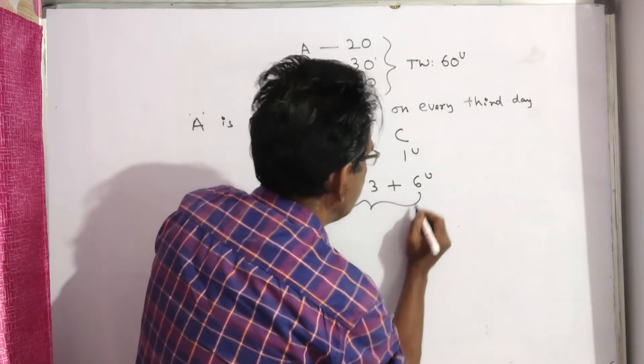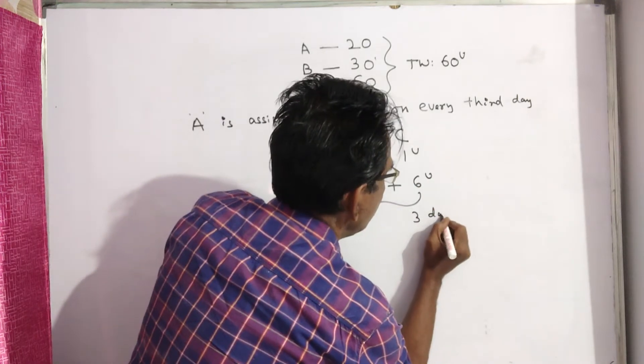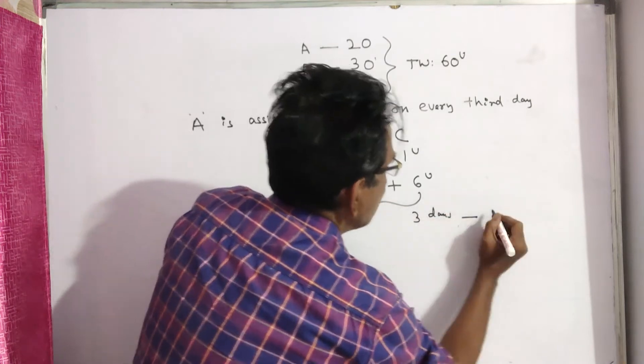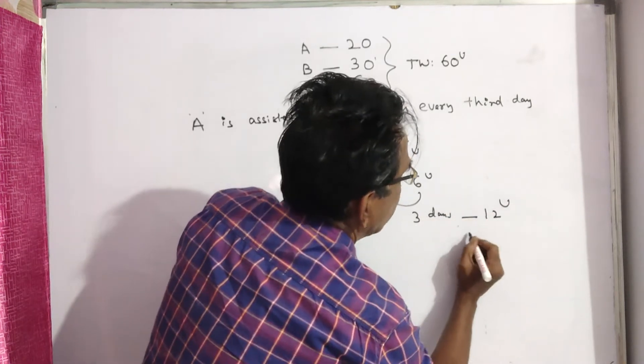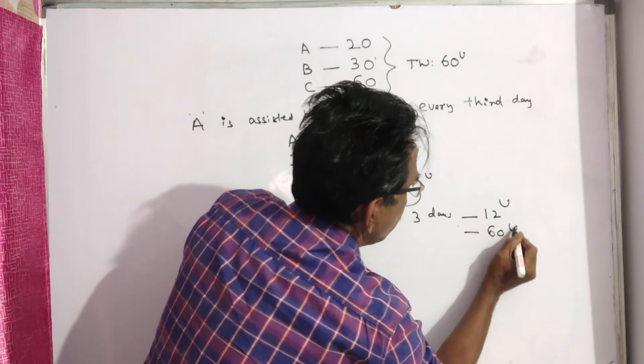So in every 3 days, 12 units of work will be completed and our total work is 60 units.